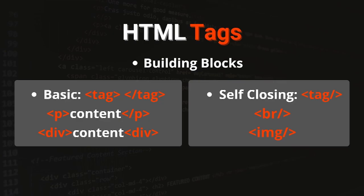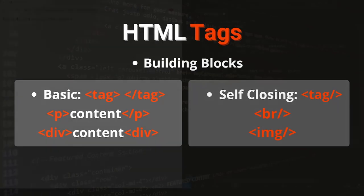Then there are the self-closing tags, which do not really require a pair because you cannot put anything between them. The structure is simply angled brackets, but the forward slash is going to be at the end of the tag. For example there is the break tag, which is simply a line break, or there is the image tag. You could also omit the forward slash — HTML5 also accepts that format.